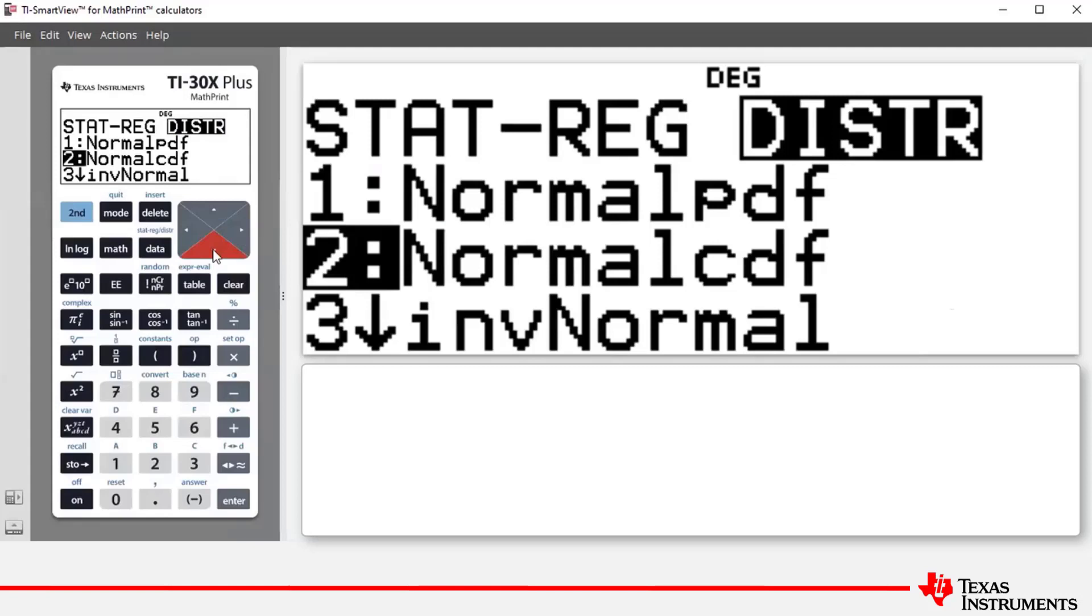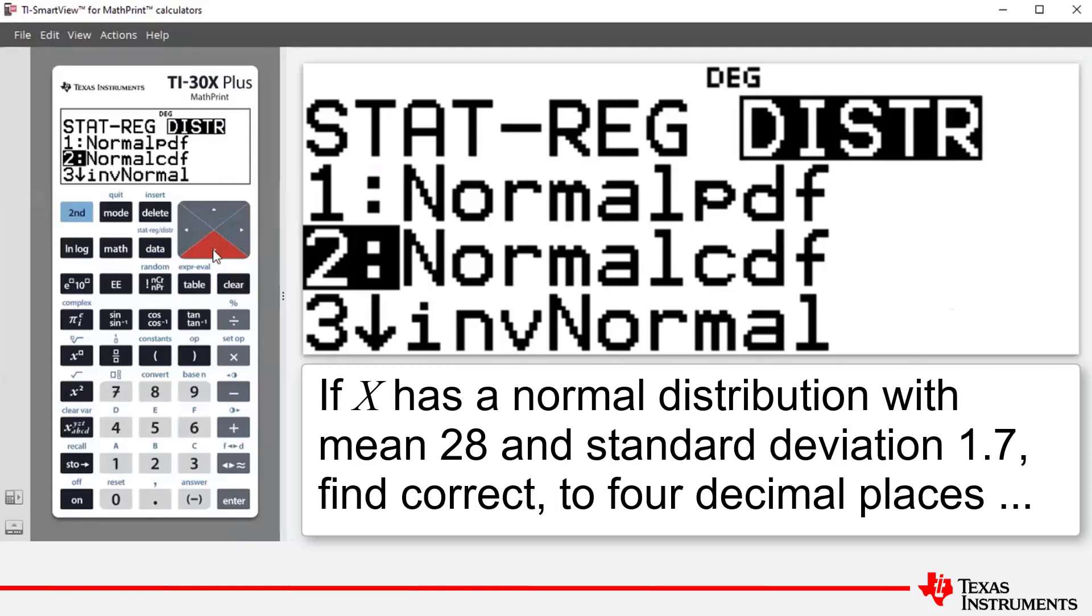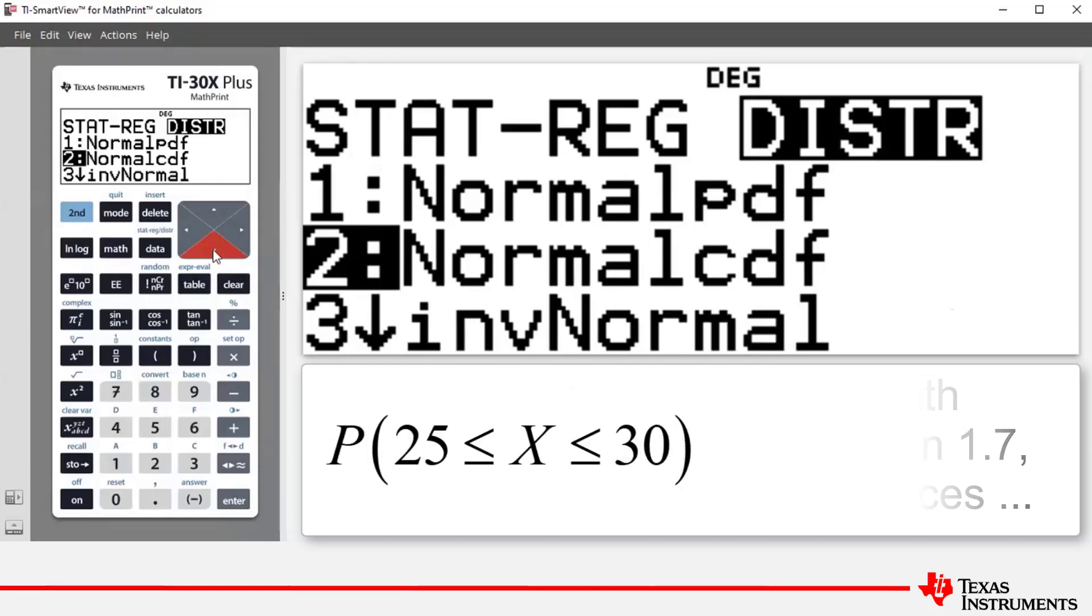Let's show the use of this command in an example. If random variable X has a normal distribution with mean μ equals 28 and standard deviation σ equals 1.7, find correct to four decimal places: part A, the probability that random variable X lies between 25 and 30, and part B, find the probability that random variable X is less than 32.